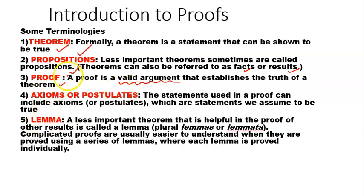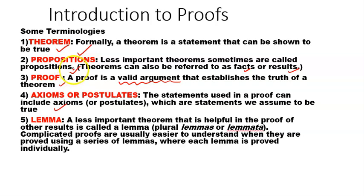We also come across terms like axioms or postulates. The statements used in a proof can include axioms or postulates, which are statements we assume to be true — basically those statements which do not merit a proof themselves but are used just to prove our theorem or proposition. Those results are known as axioms or postulates.